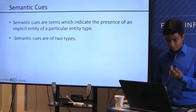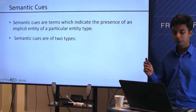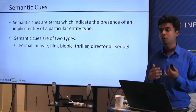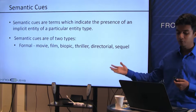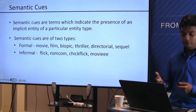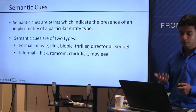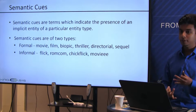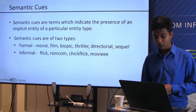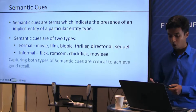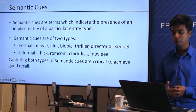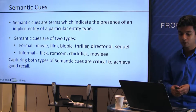Semantic cues are of two types. First is the formal set, which can be found in most dictionaries — like movie, film, biopic, thriller, directorial, and sequel. Second is informal, which is used in Twitter and internet slangs — for example, flick, romcom, and chick flick. The idea is to capture as many of both kinds as possible, to improve the recall of the algorithm.